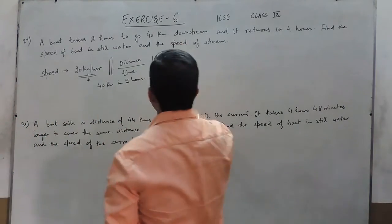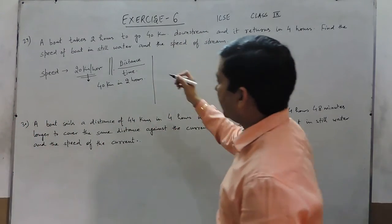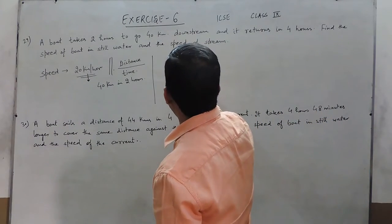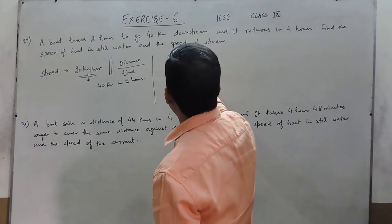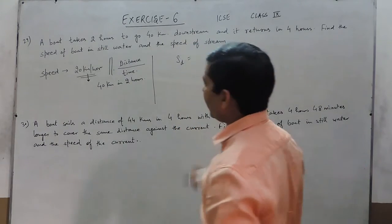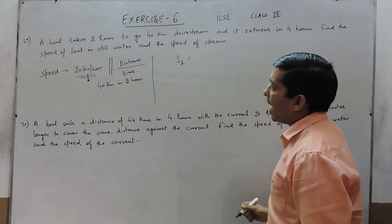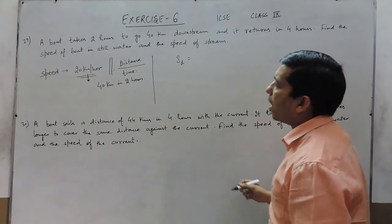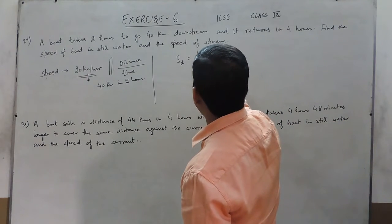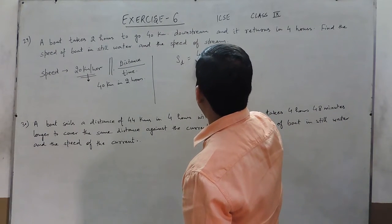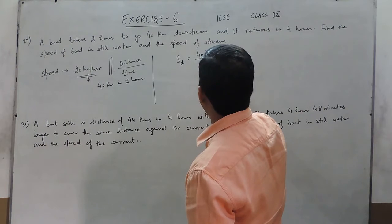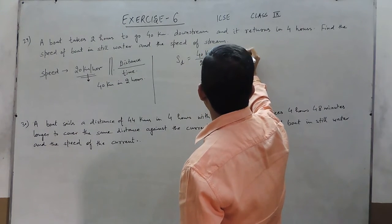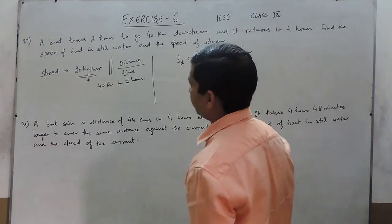In these two questions, the speed is given in the format of distance and time. So when I talk about speed downstream — I am writing it as SD — the boat is going 40 km in 2 hours. That means 40 km divided by 2 hours, and the speed downstream comes out to be 20 km per hour.